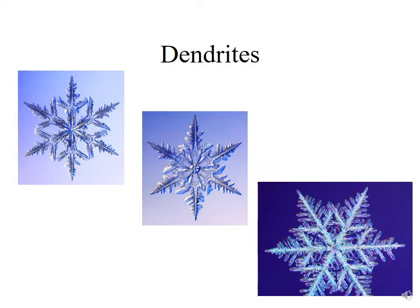Here we have true dendrites. They always have the six sides so common with the water molecule. You essentially have branches growing off each of the six spines. The intricacy of the dendrite branches depends upon the supersaturation of the environment — the more supersaturated it is, the more complex and beautiful the individual dendrite becomes.